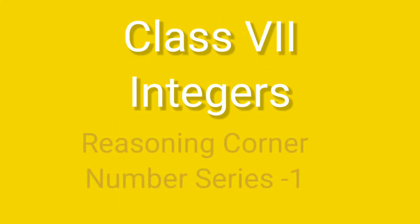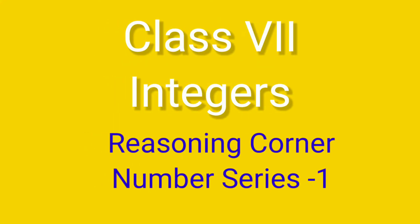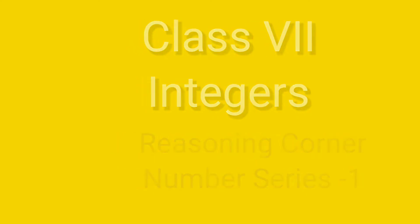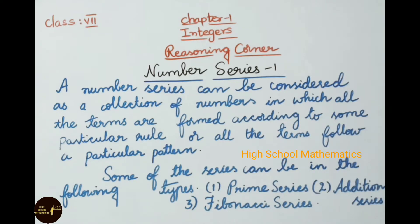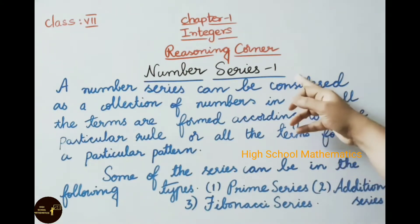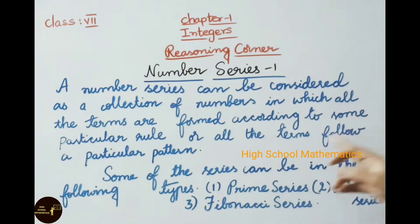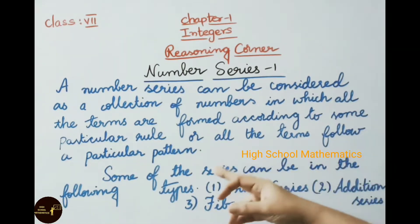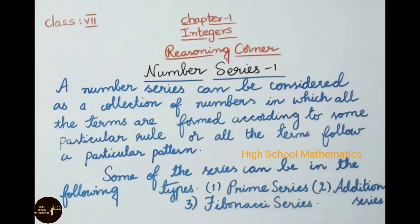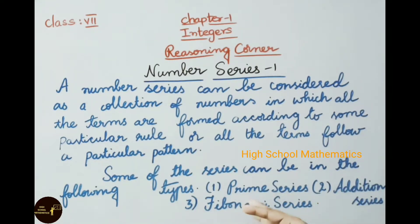Hello everyone, welcome to high school mathematics channel. Today we are going to learn Class 7 Chapter 1 integers reasoning corner. In the new syllabus, the government has introduced a reasoning corner at the end of each chapter. So in this chapter we are going to learn number series. A number series can be considered as a collection of numbers in which all the terms are formed according to some particular rule, or all the terms follow a particular pattern. We will look at three types: prime series, addition series, and Fibonacci series.